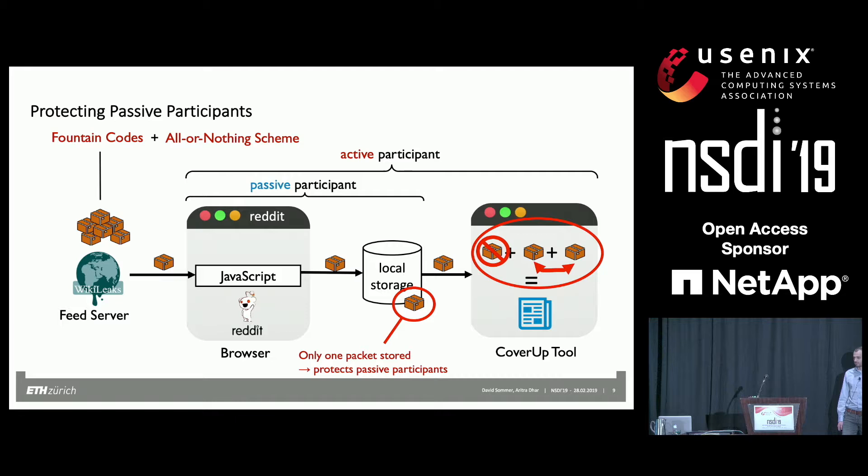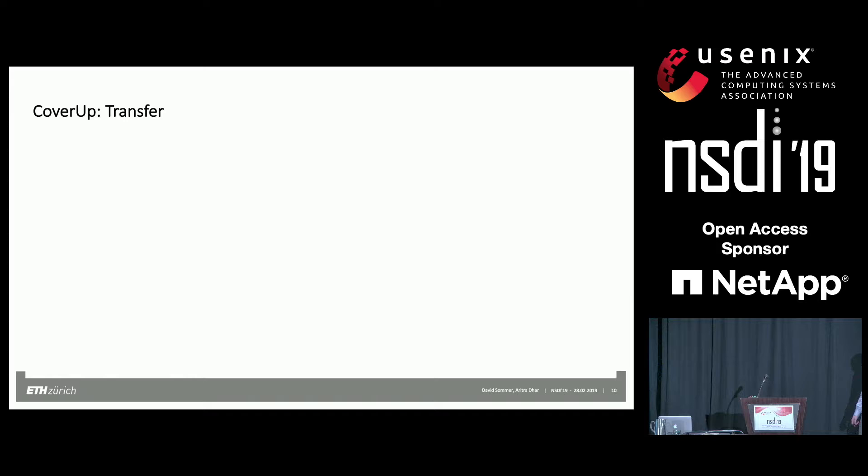It is important that the JavaScript only keeps one packet chunk in local storage at a time because we use an all-or-nothing encryption scheme. Until you have a threshold number of packets, you cannot decrypt them. One packet alone is indistinguishable from random-looking encrypted data. That's how we protect the passive participants.